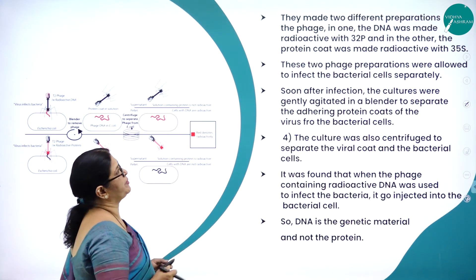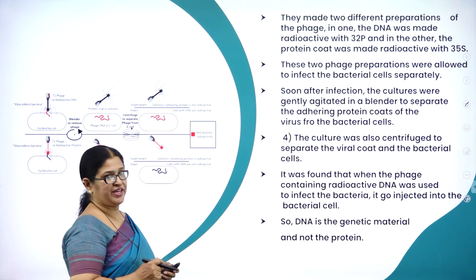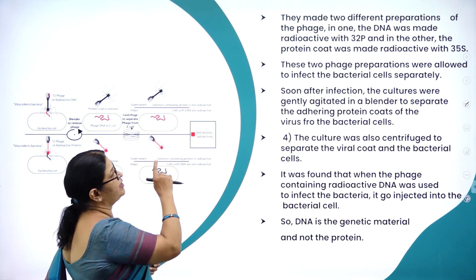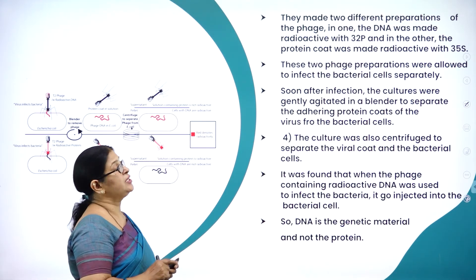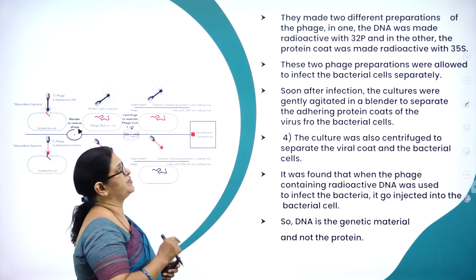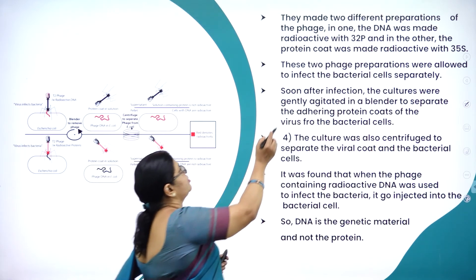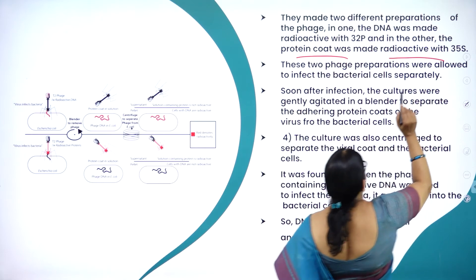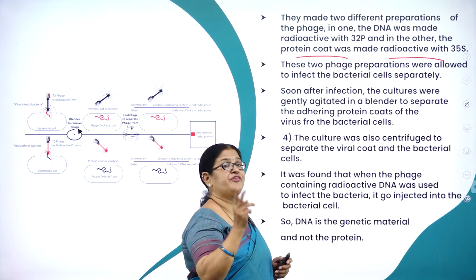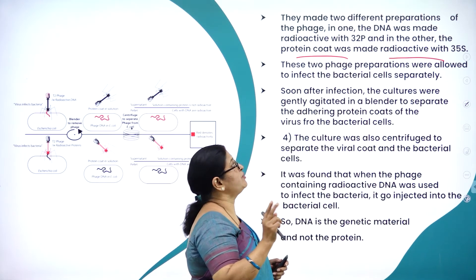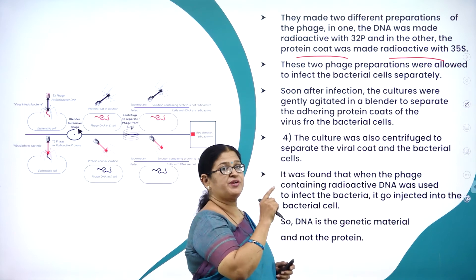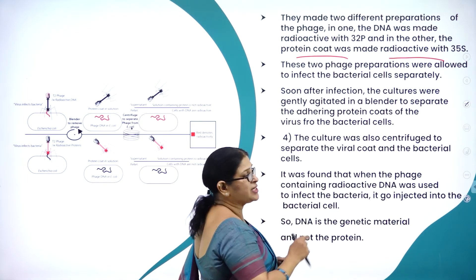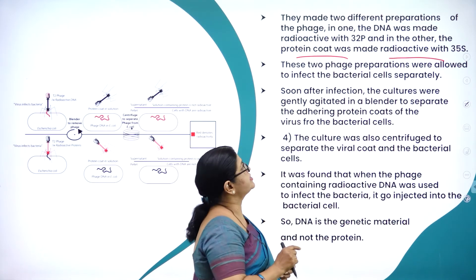They made two different preparations of the phage. In one, the DNA was made radioactive with 32-phosphorus, and in the other the protein coat was made radioactive with 35-sulphur. These two phage preparations — one with radioactive 32-phosphorus and the other with 35-sulphur — were used in the experiment.